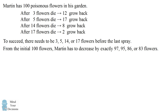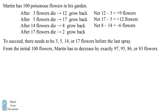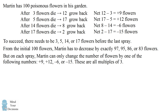Let's consider the net change after each setting of the spray. If he uses a setting of 3, he kills 3 but 12 grow back, which leads to plus 9 flowers. For the setting of 5, there is a net change of plus 12 flowers. For the 14 setting, he decreases the number of flowers by 6, and for the 17 setting, he decreases the number of flowers by 15.